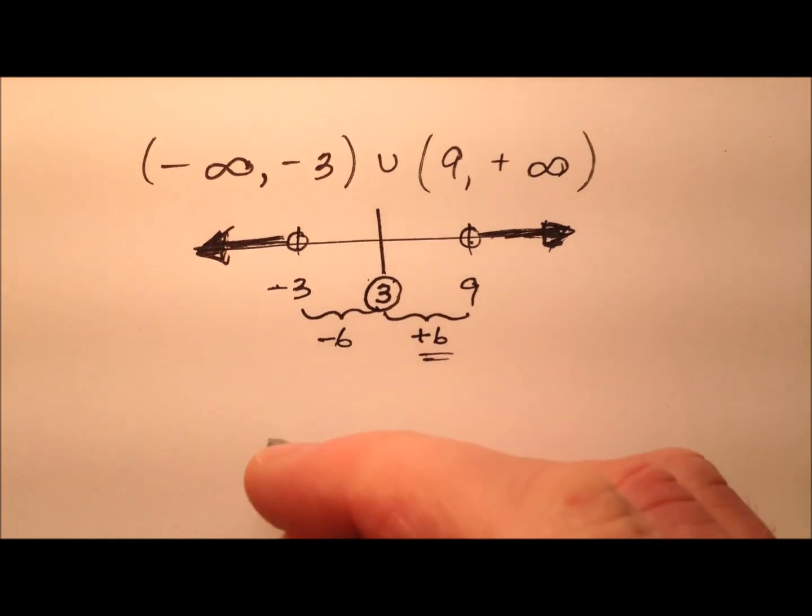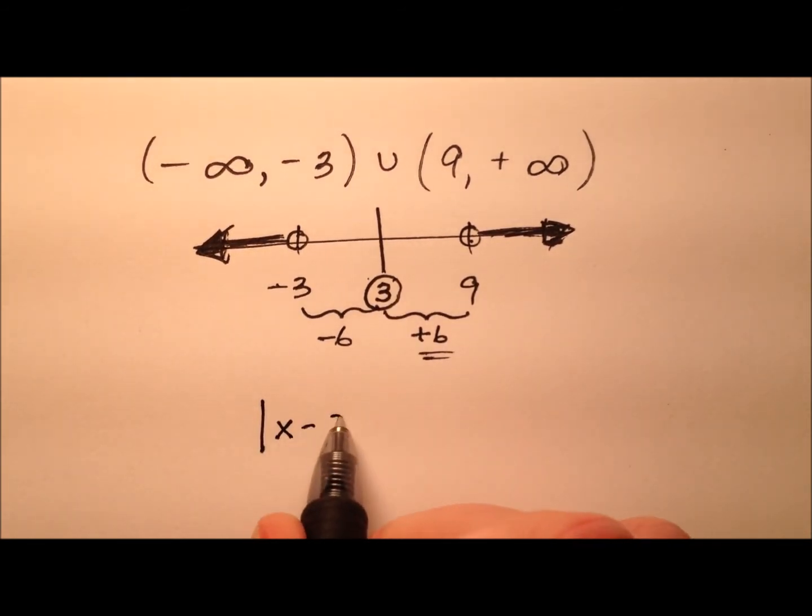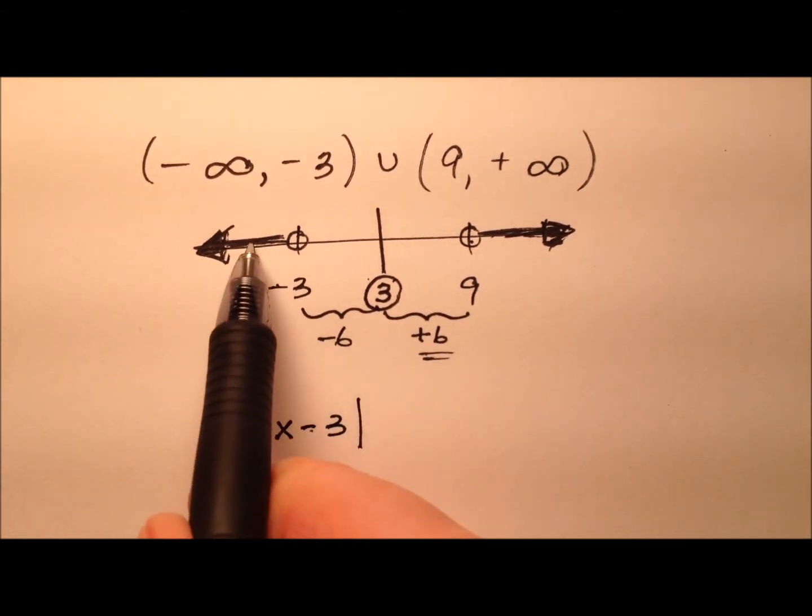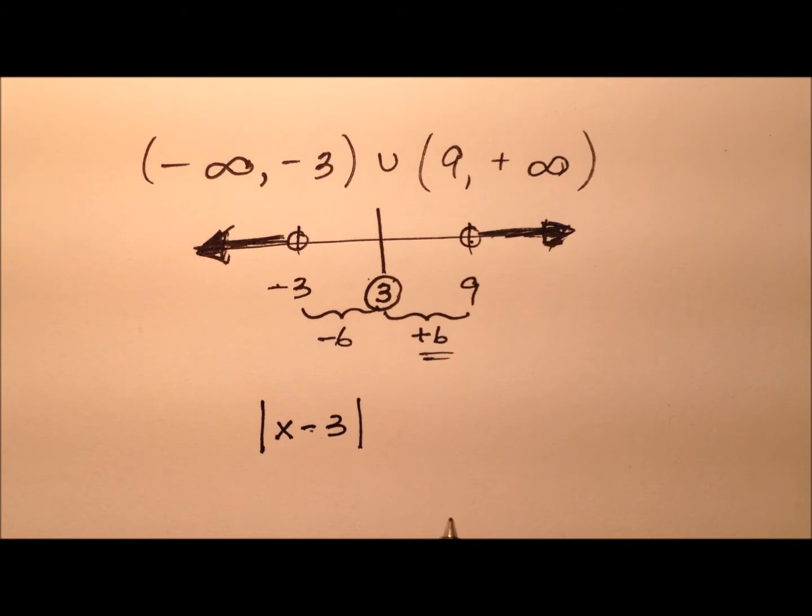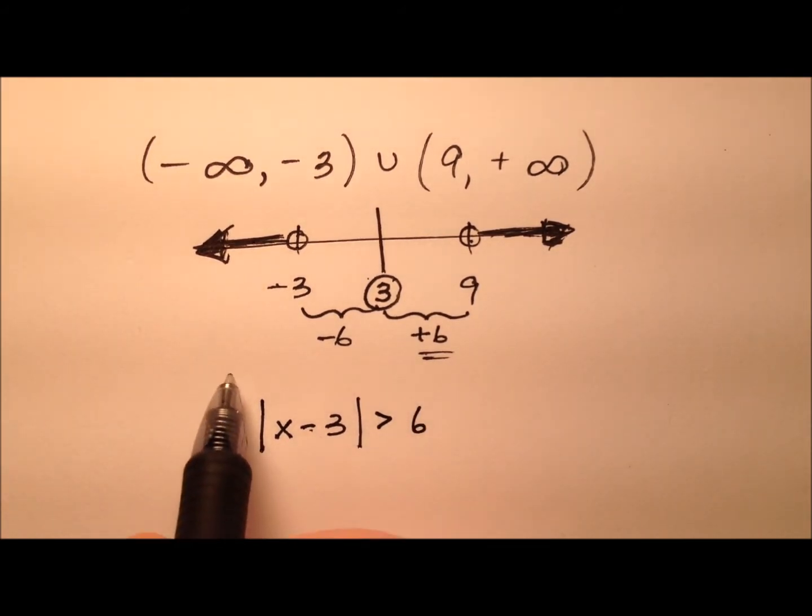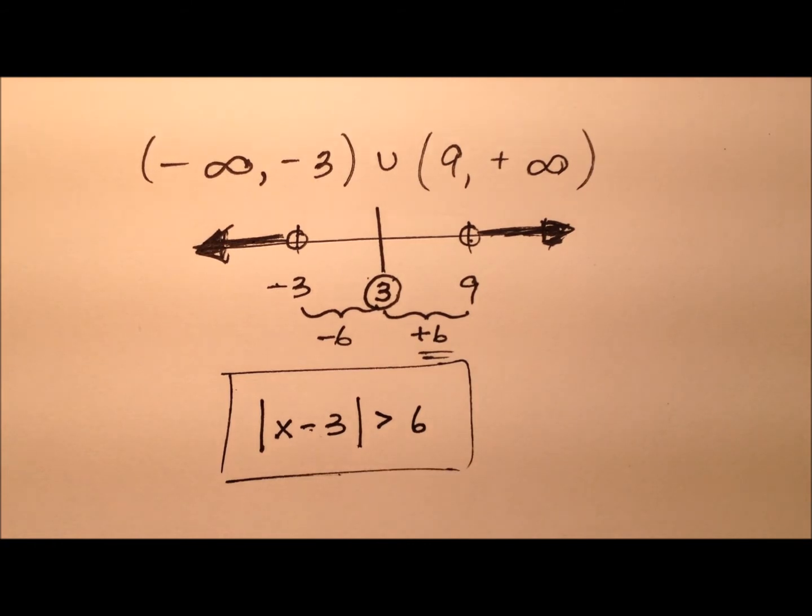So the way I can write this absolute value inequality is x minus 3, and it's x minus the midpoint, and since we're going outside, we need this to be greater than, and then there's our distance right there. So here's what our absolute value inequality will look like.